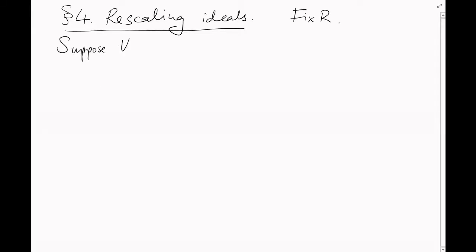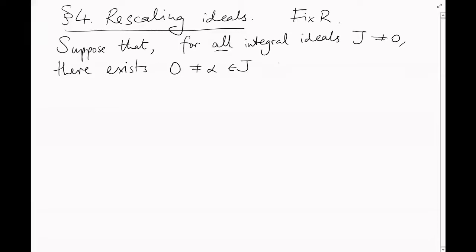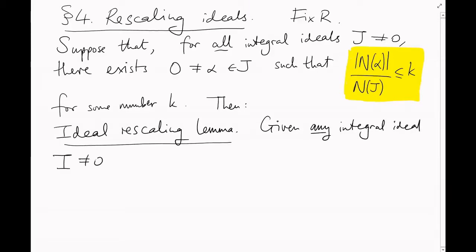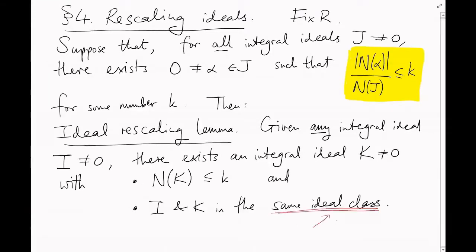Section 4: Rescaling ideals. Here's an important trick we're going to use several times. Let's fix some ring R, and suppose we know that for any non-zero integral ideal J, there exists some non-zero element α in J such that the absolute value of the norm of α divided by the norm of J is at most K, for some number K. The ideal rescaling lemma says: given any non-zero integral ideal I, there exists a non-zero integral ideal K in the same ideal class as I, with norm of K at most K. This tells us that to understand all ideal classes, we only need to check integral ideals of small norm.